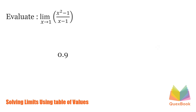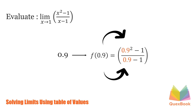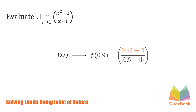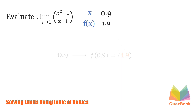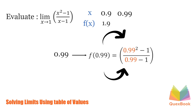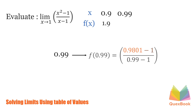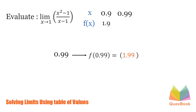Let's try 0.9 first. Evaluating, we have 0.9 squared minus 1 over 0.9 minus 1. 0.9 squared is 0.81, minus 1 is negative 0.19, over 0.9 minus 1 which is negative 0.1. Dividing the function, we have 1.9. For our next number, let's try a number much closer to 1 — how about 0.99. Evaluating, we have 0.99 squared minus 1 over 0.99 minus 1. 0.99 squared is 0.9801, minus 1 will have negative 0.0199, over 0.99 minus 1 which is negative 0.01. Dividing the function, we'll have 1.99.